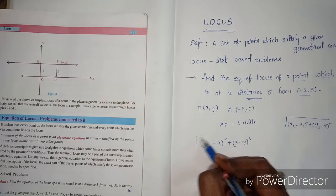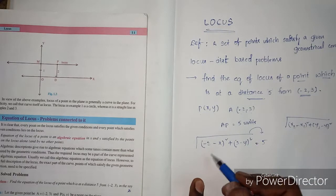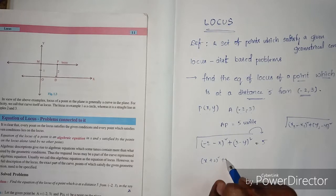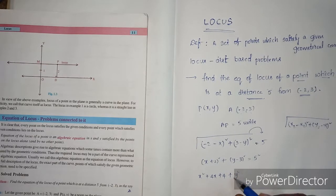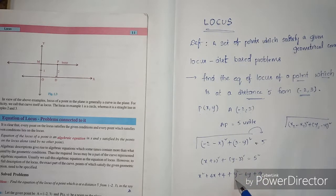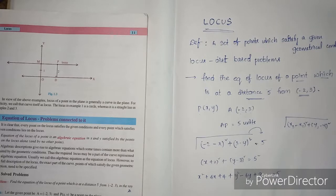So substituting: x2 = x, y2 = y, x1 = -2, y1 = 3. So root of (x - (-2))² + (y - 3)² = 5. Squaring both sides: (x + 2)² + (y - 3)² = 25. Expanding: x² + 4x + 4 + y² - 6y + 9 = 25.